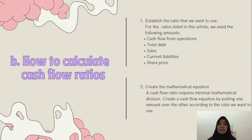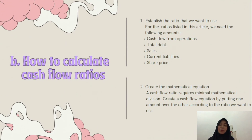Now, how to calculate cash flow ratios. First, we must establish the ratio we want to use. When calculating a cash flow ratio, we need two specific pieces of financial information. The first step is to list the amounts we need at the start, which helps us focus on one thing at a time. For the ratios discussed, we need: the amount of cash flow from operations, total debt, sales, current liabilities, and share price.